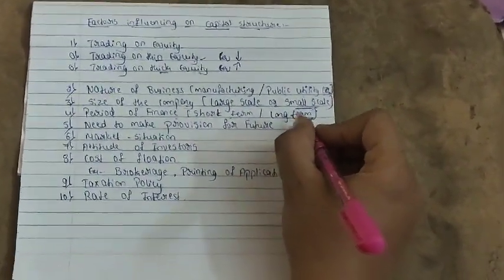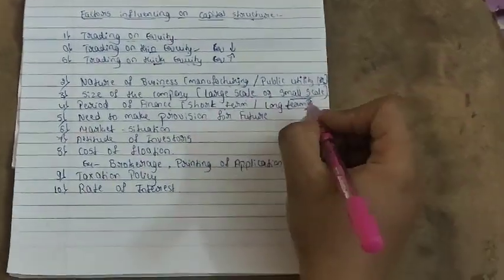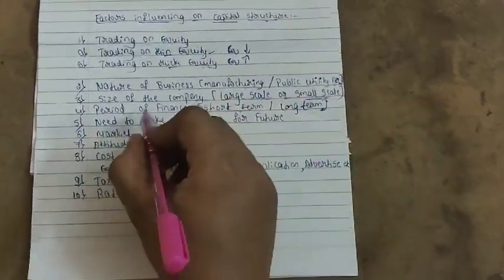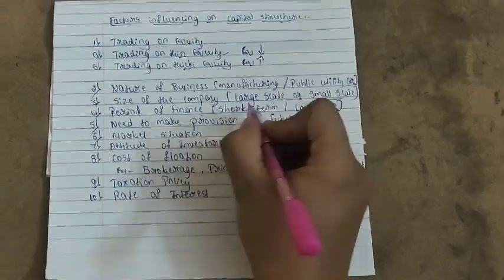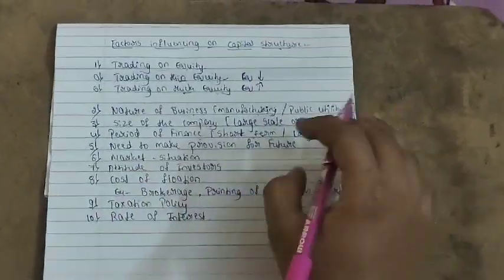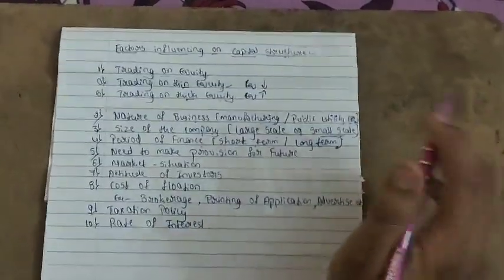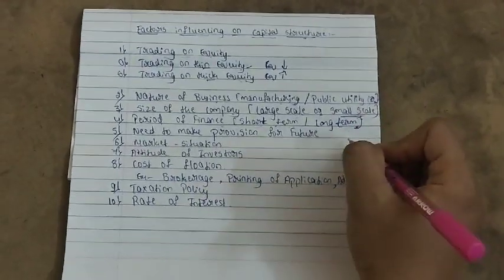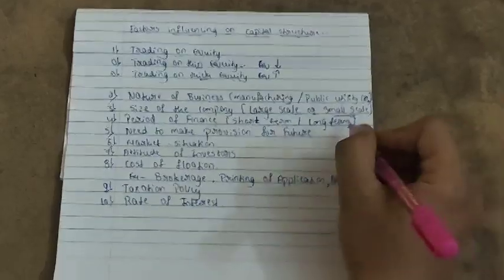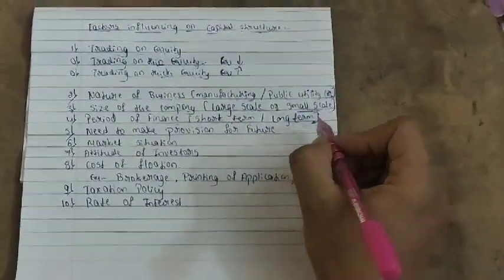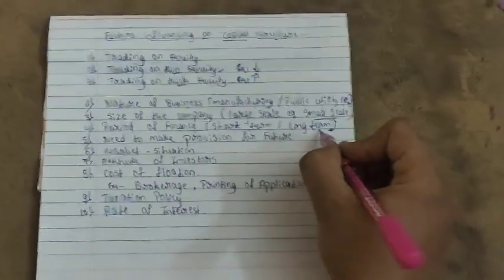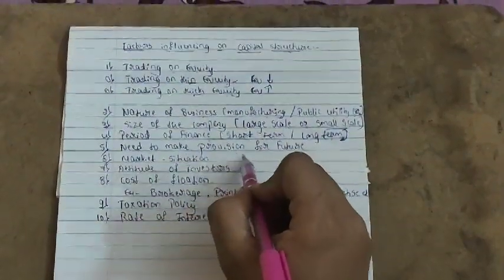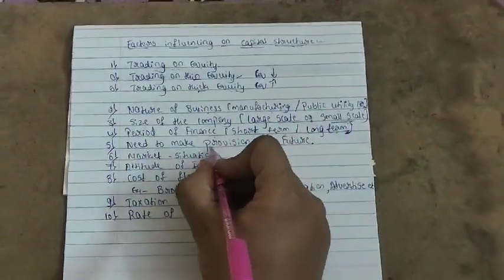Another important factor is the period of finance — whether short term or long term. Short term means within five to ten years. For short term needs, it is better to issue debentures since the time period is limited. For long term funds needed beyond ten to fifteen years or more, equity is preferred because the business will run for a long time.